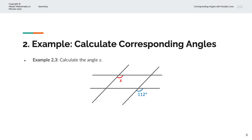In the third example, we're asked to calculate the angle X. Here we have two pairs of parallel lines — this one and this one form the first pair, and this line and this line form the second pair. X has a corresponding angle here, which we can label as Y. Y also has a corresponding angle here, which is 112, because these two are parallel lines and this is the third intersecting line. So Y equals 112 degrees, and because X and Y are corresponding angles, X equals 112 degrees as well.